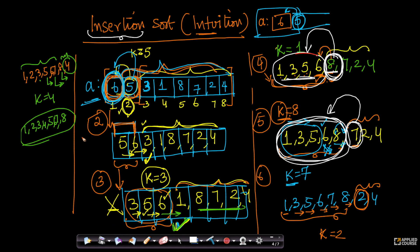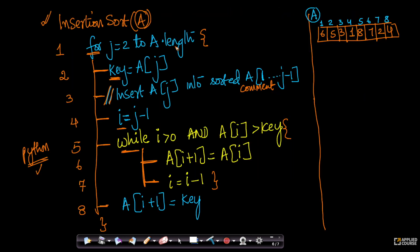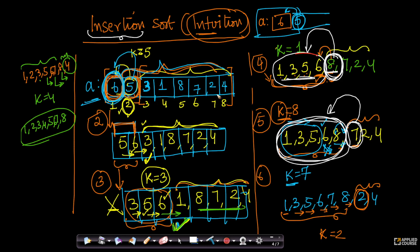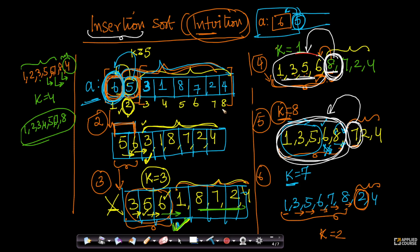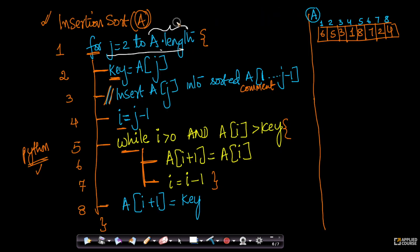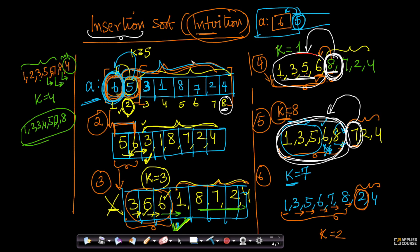Now let us go into the code itself. For any code in data structures and algorithms, you basically take your intuition and convert it into code. Let's use the same example as before so we can better connect the intuitive explanation with the code walkthrough. The variable j goes from 2 to A.length — here A.length means the length of the array. Since our array has 8 elements, A.length equals 8, so j goes from 2 to 8. In the intuition, we started with the second element because the first element is trivially sorted.